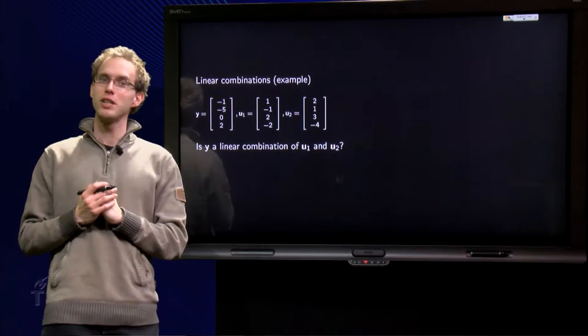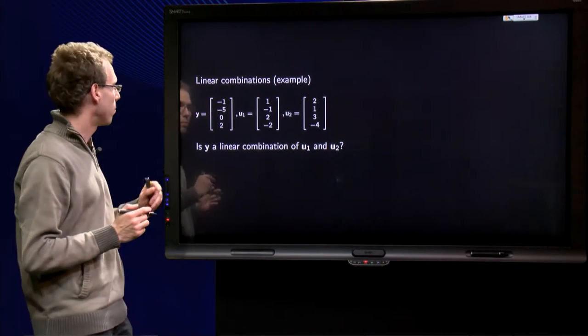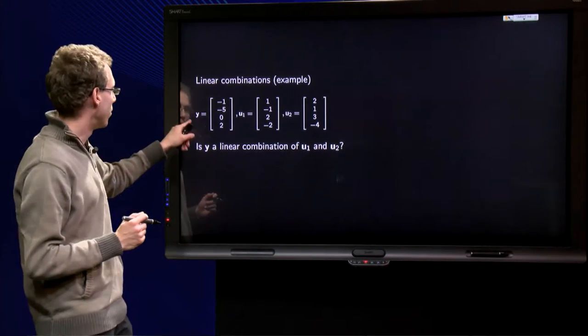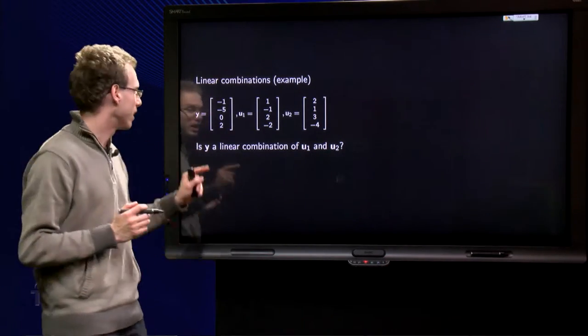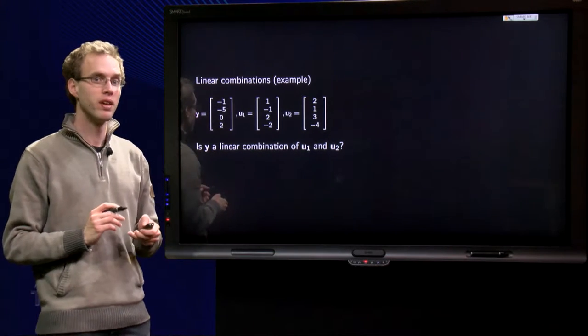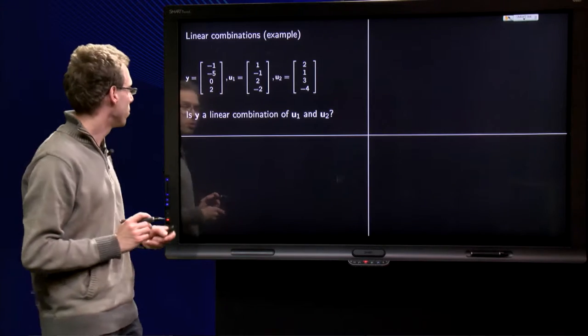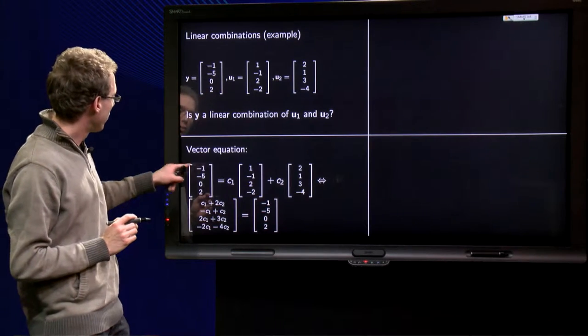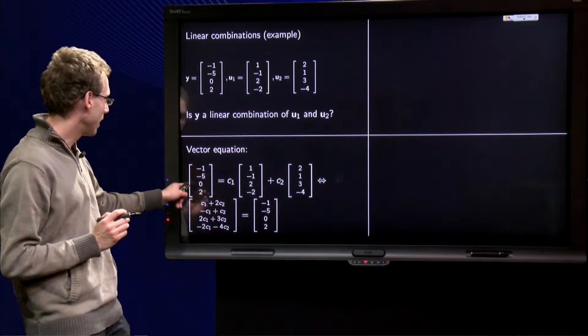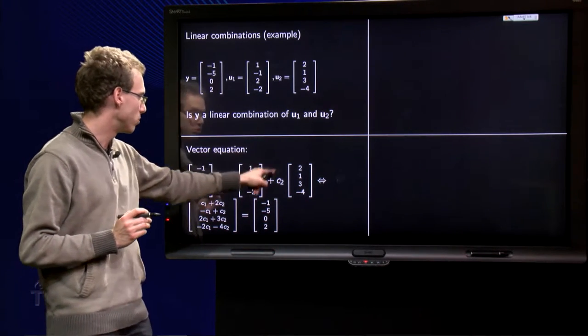Here we have an explicit example. We have u1 and u2 given as vectors and a y given. And the question is, is y a linear combination of the vectors u1 and u2? So what do we need to do? We need to find weights c1 and c2 such that y equals c1 times u1 plus c2 times u2.